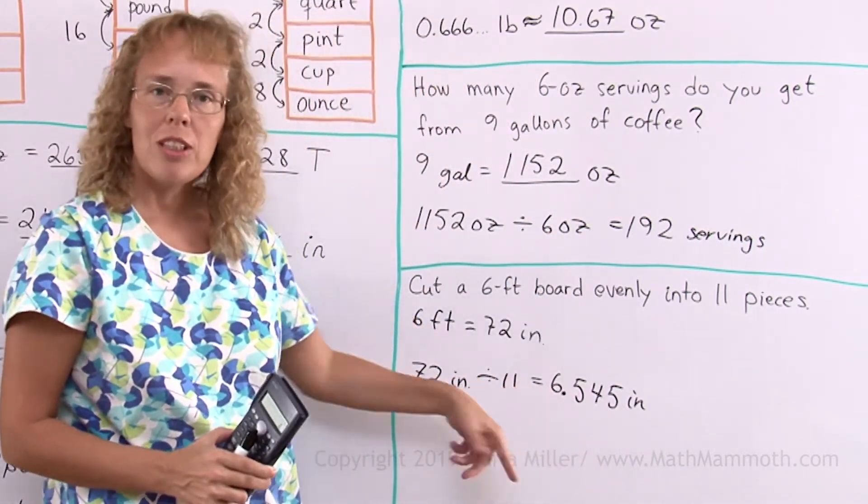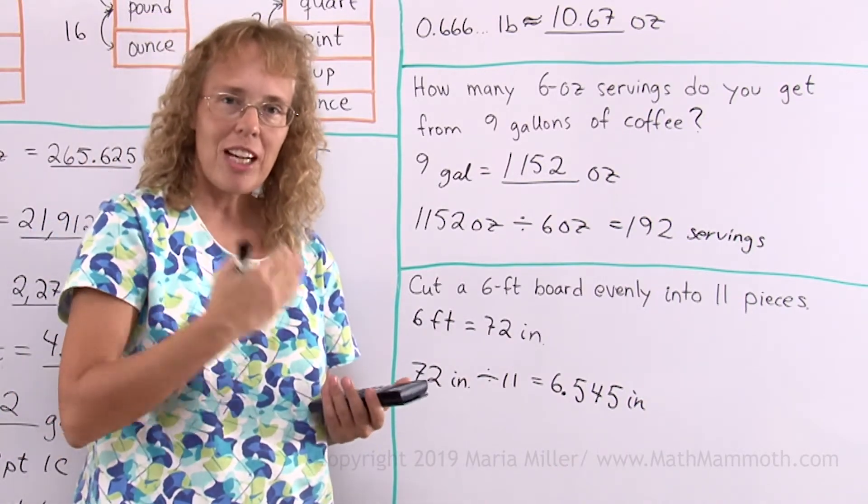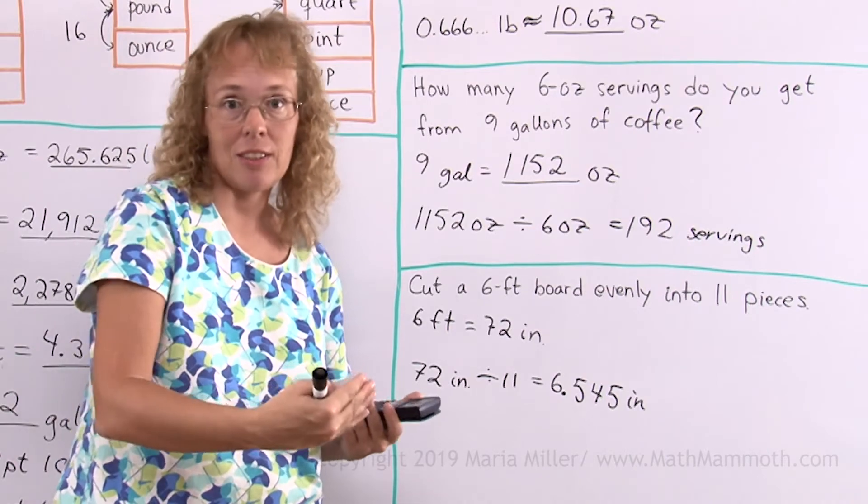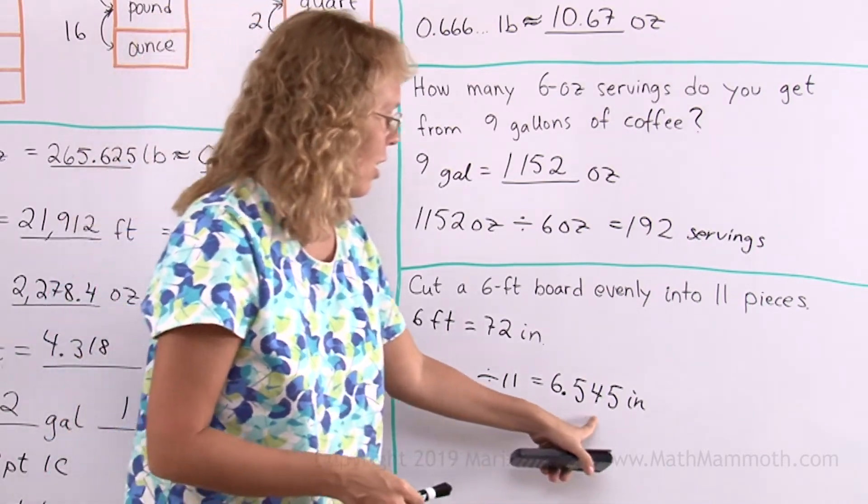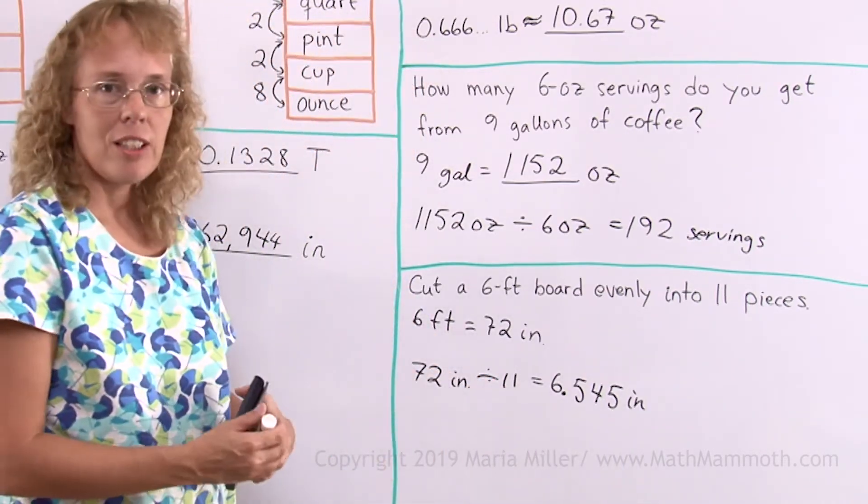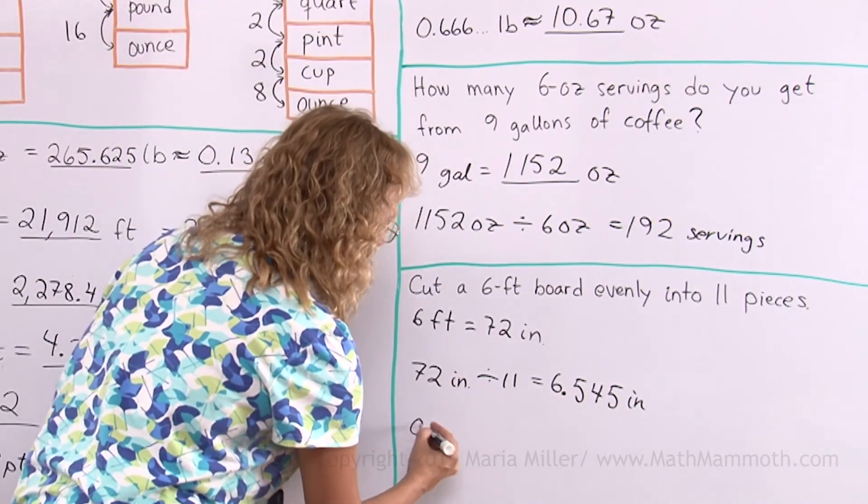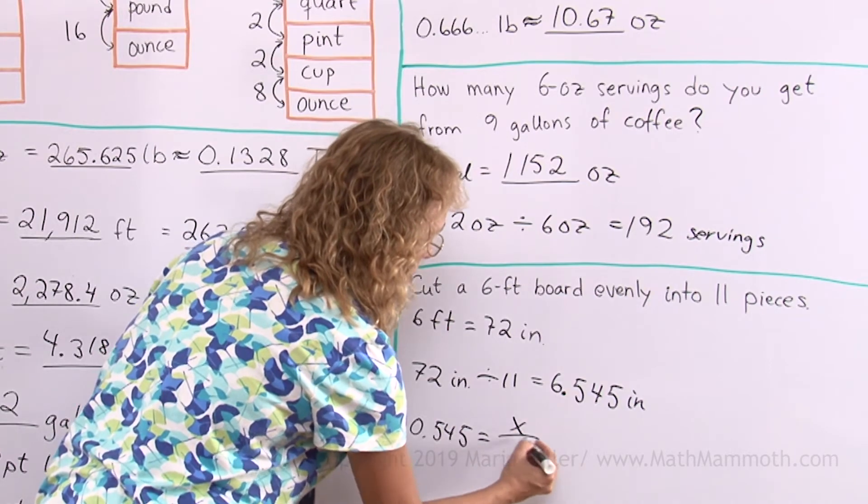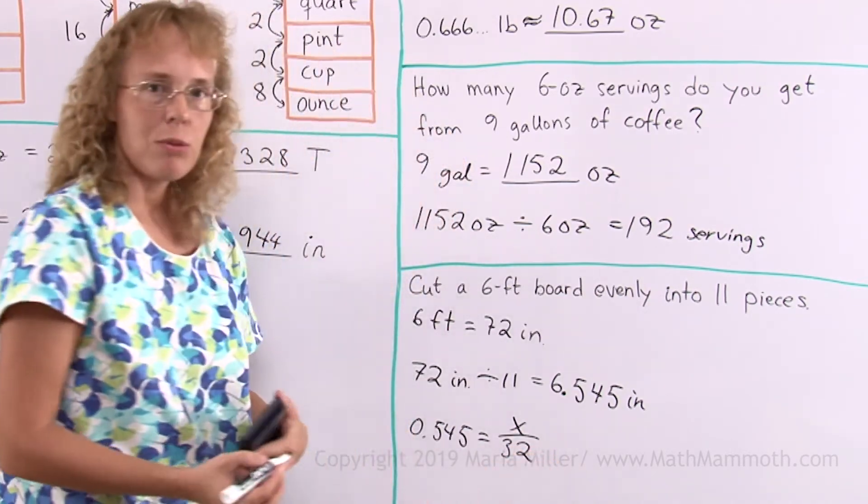But now you probably want to measure this with a measuring tape that has fractions of an inch. It can have 16th parts of an inch or 32nd parts of an inch. So you want to know how many 32nd parts of an inch will this make. And this is how you can solve that one. Take the decimal part only. Make an equation. How many 32nd parts would it make?